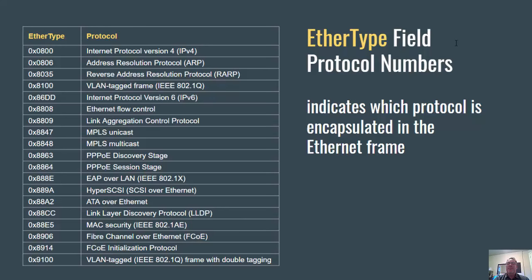The Ethertype field protocol numbers indicate which protocol is encapsulated in the Ethernet frame, showing the different types of protocols that can be in the payload. It could be an IPv4 packet (0x0800), ARP (0x0806), reverse ARP, or a VLAN tag (0x8100). 0x86DD is IPv6. Other types include Link Aggregation Control Protocol, MPLS, PPPoE frames, EAP over LAN (802.1X), and even SCSI over Ethernet — a wide variety of Ethertype field values.